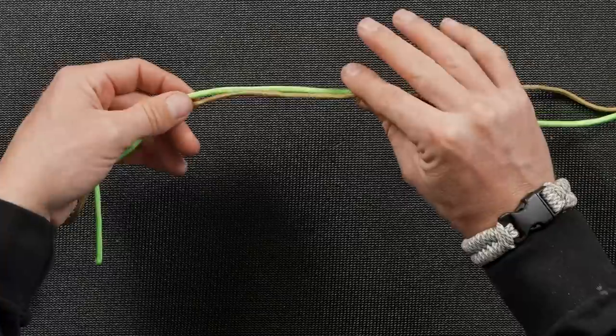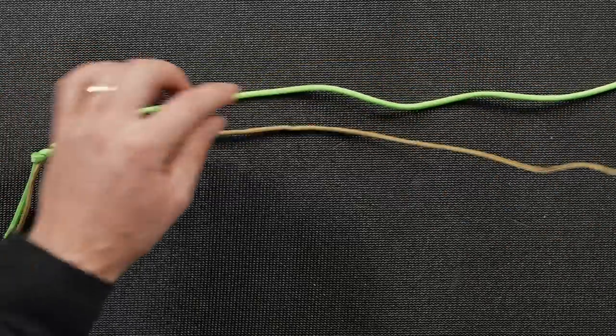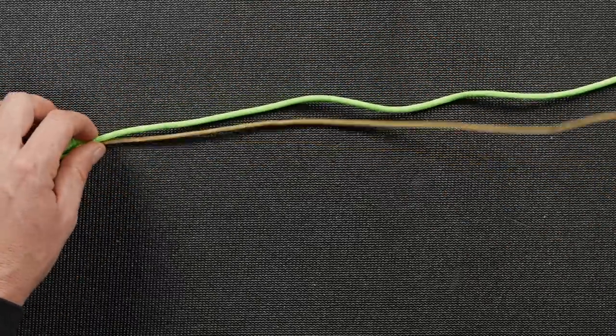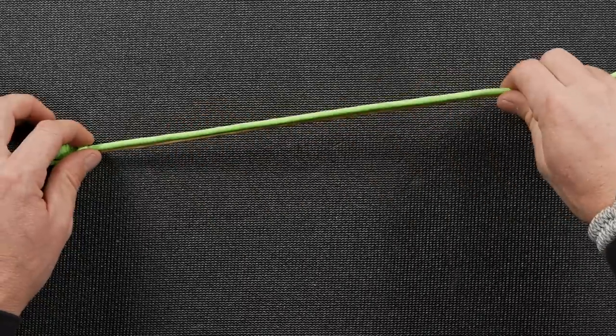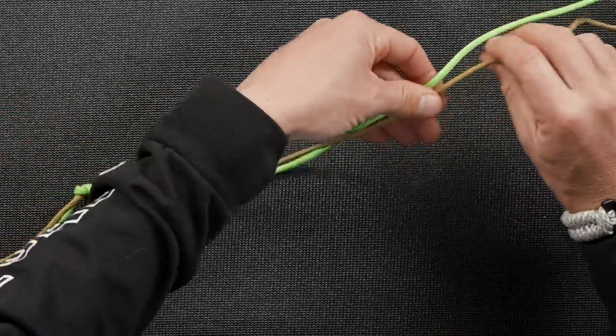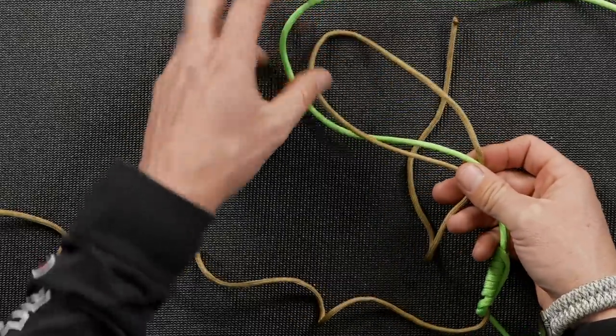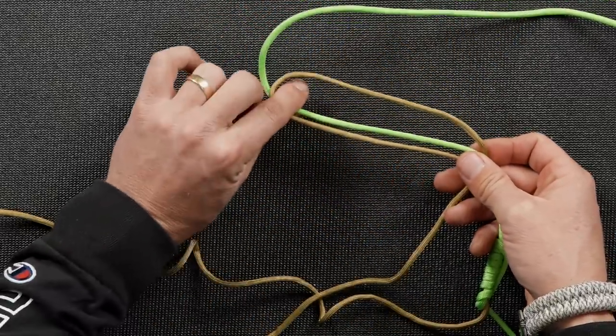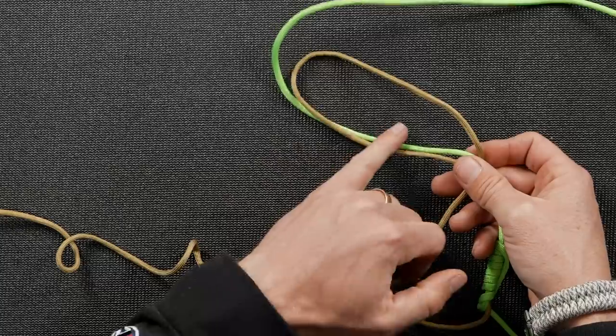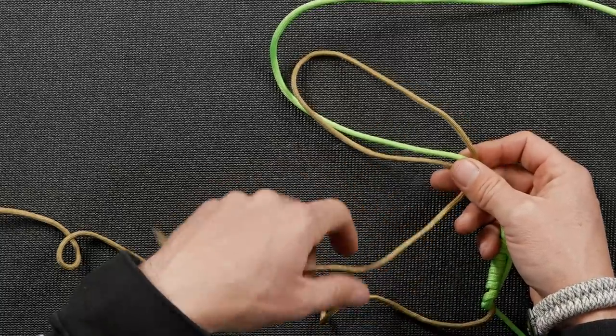So now we'll move to our mono going around our braid, or our fluoro going around our braid. Overlap, come back down, create the loop. There's our loop right here. We're going to go around these two lines five or six times.